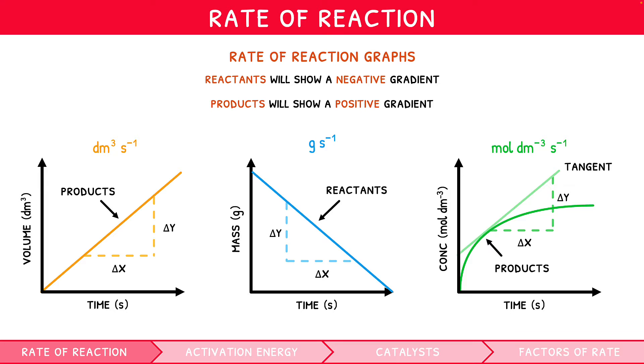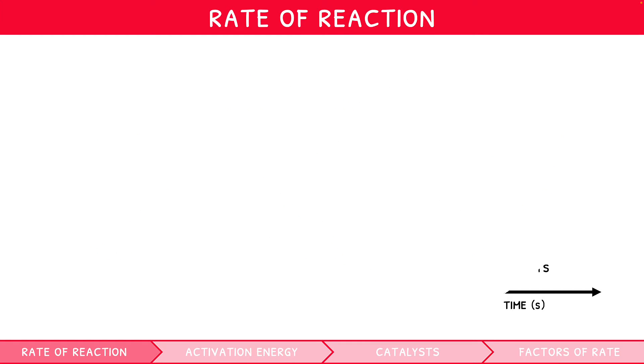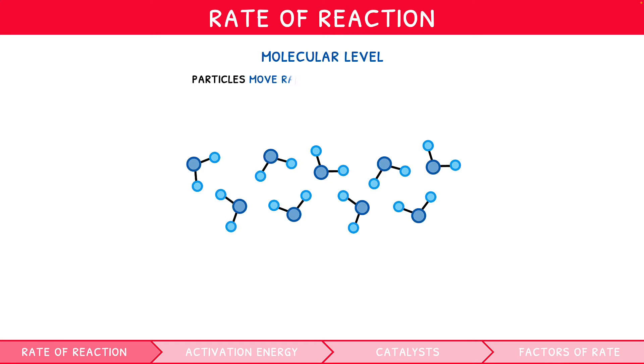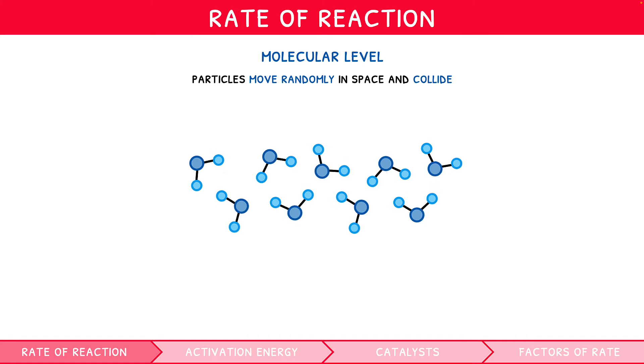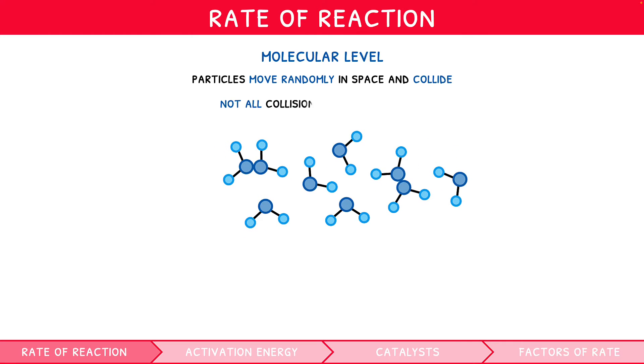So, a reaction rate can be represented using the reactants or product. But what occurs on a molecular level during a reaction? Particles move randomly in space and collide with one another frequently, but this doesn't always cause a reaction. For a reaction to occur successfully, the reactants must collide with one another with two main criteria being fulfilled.